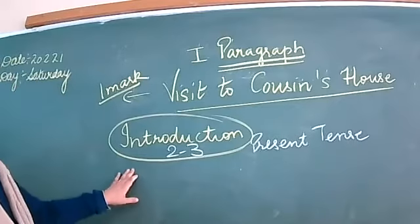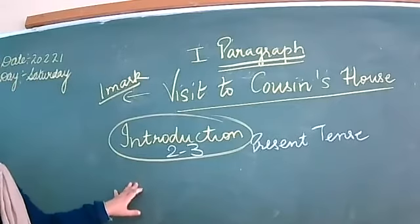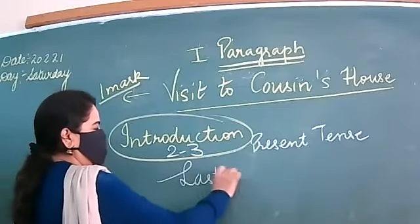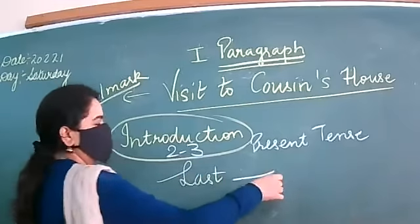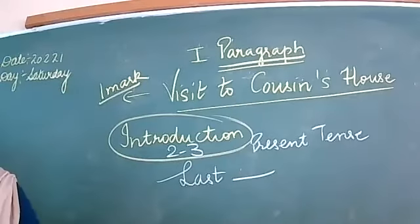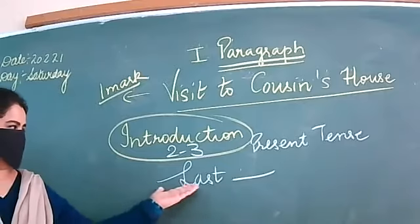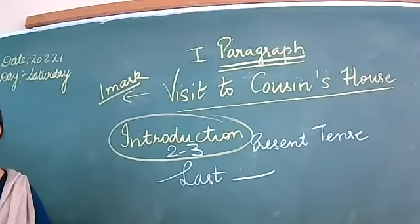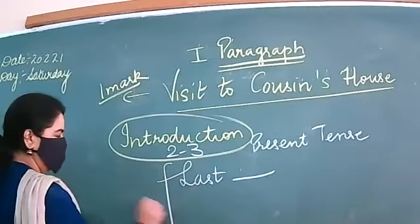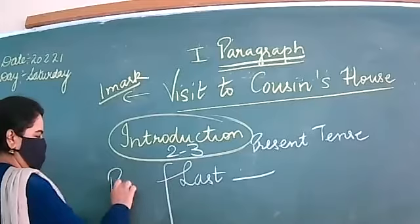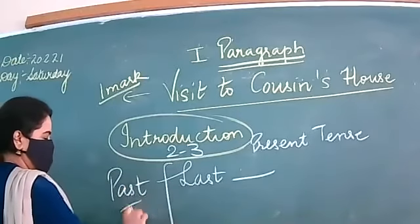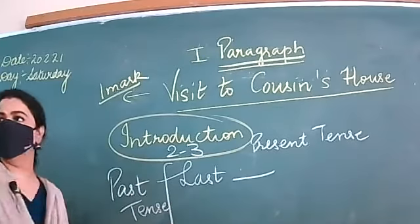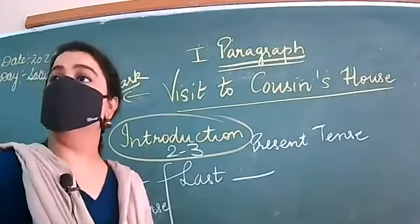After the introduction, you will write when you last went there — last Sunday, last month, whenever. From here you will start your past tense. Now strictly past tense — you are not supposed to use present tense from this point.